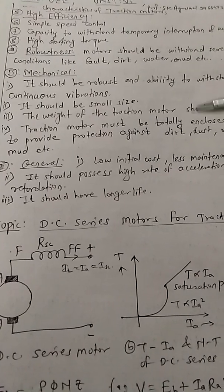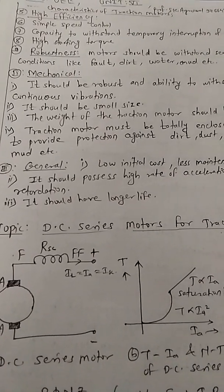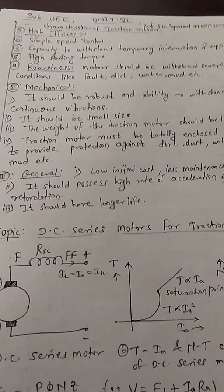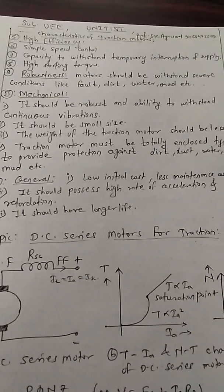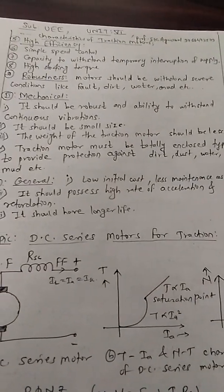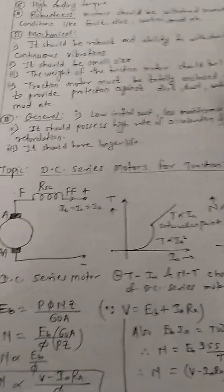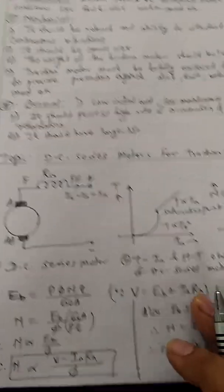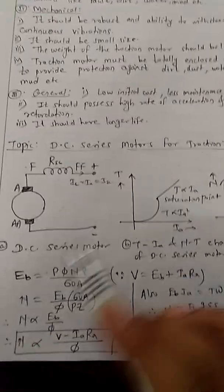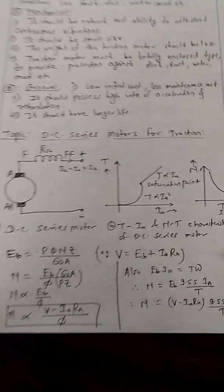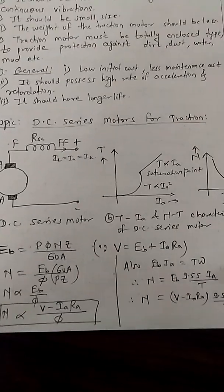General characteristics: it should have longer life. It should possess high rate of acceleration and retardation. Low initial cost, less maintenance cost. Here we are taking the example of DC series motor for its characteristics. It is suitable for traction motors.